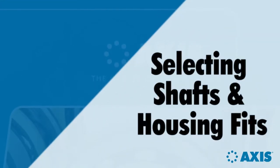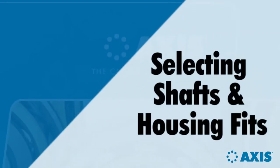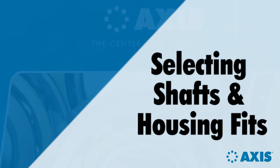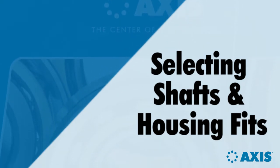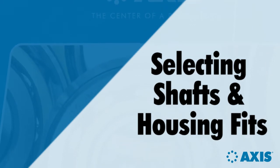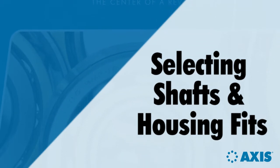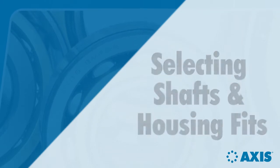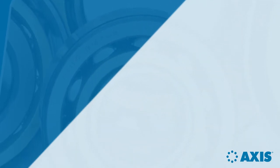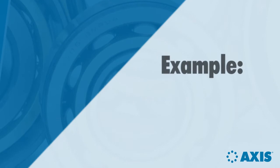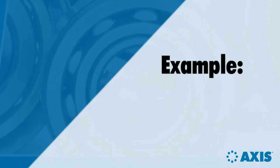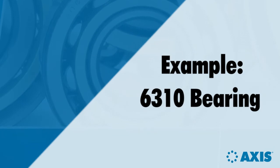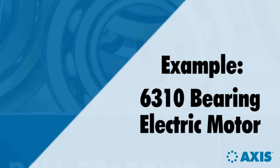In this short video we'll cover how to determine the correct shaft and housing fits for your bearing application. This video makes use of the AXS ball bearing catalog edition AXS 16. A link to the catalog can be found in the video description below. Before we begin, let's consider an application for example purposes. In this tutorial we will use a 6310 bearing with the intention of installing it in an electric motor.